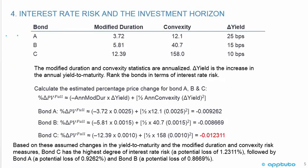Here's the table with bond A, B, and C — modified duration, convexity, and change in yield. The task is to rank the bonds in terms of interest rate risk by calculating the estimated percentage price change for bonds A, B, and C using the formula: percentage change in the bond equals negative the annual modified duration times the change in yield, plus one-half the annual convexity times the change in yield squared.